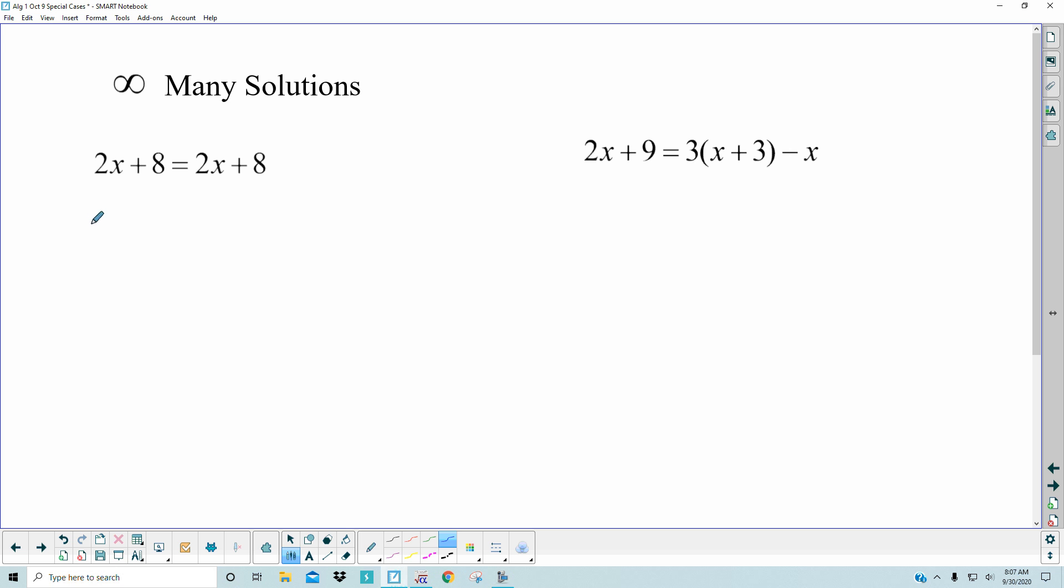If I were to pick x is equal to 5 and fill it into the equation here and here. So there'd be 2 times 5 plus 8. Is that the same as 2 times 5 plus 8? Of course it is. But 10 plus 8 is equal to 10 plus 8. Sure. So 18 is equal to 18.